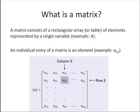So what is a matrix? A matrix consists of a rectangular array or table of elements represented by a single variable. An individual entry of that matrix is called the element, similar to what we did with vectors. In this example, here's element A23, and when we talk about those subscripts, we always say the row, then the column. That's located in the second row of the matrix A, and the third column of the matrix A would be element A23.